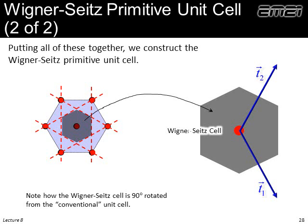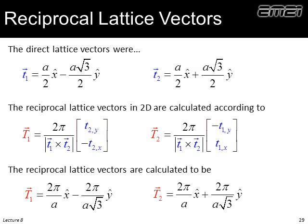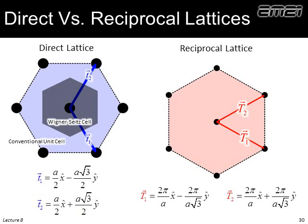Next are the reciprocal lattice vectors. We don't even need to know about hexagonal symmetry — we throw the direct lattice vectors into our equations and come up with the reciprocal lattice vectors. Notice our direct lattice vectors have a magnitude related to A in some way, while the reciprocal lattice vector magnitudes are related to π/A — that shouldn't be surprising. Here are our direct and reciprocal lattices side by side, along with the lattice vectors we calculated. We still have yet to construct the irreducible Brillouin zone and the Brillouin zone.